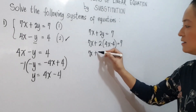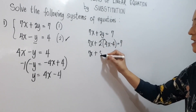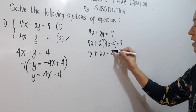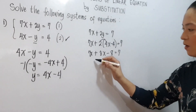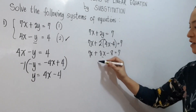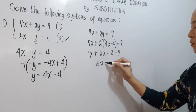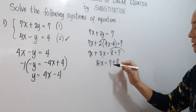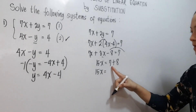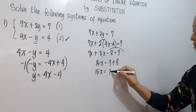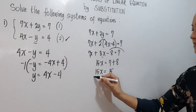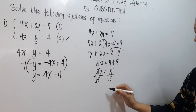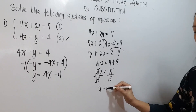This is 7x plus 2 times 4x which is 8x, minus 2 times negative 4 which is negative 8, equals 7. So 7x plus 8x is 15x, and 7 plus 8 is 15. So 15x equals 15. Dividing both sides by 15, x is equal to 1.